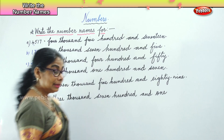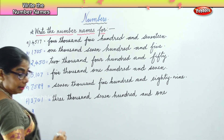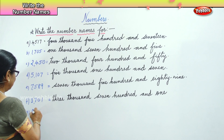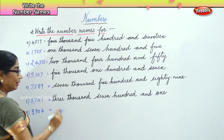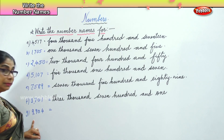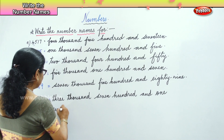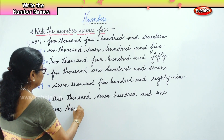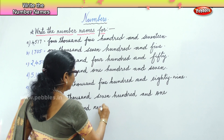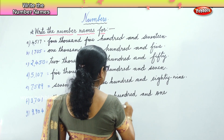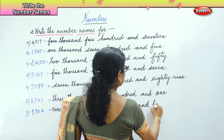The next number is 9904. Let's read that number to write its name. Nine thousand nine hundred and four. Very good. Nine thousand, nine hundred and four.